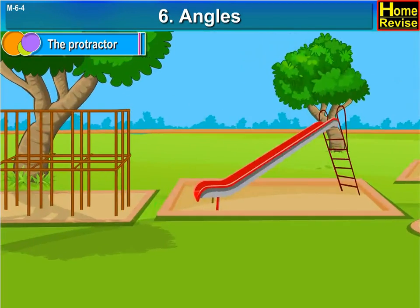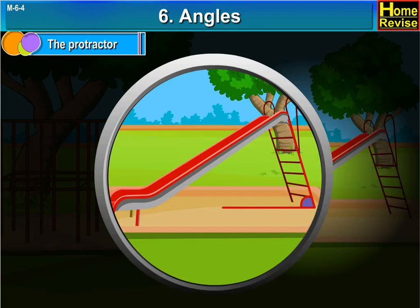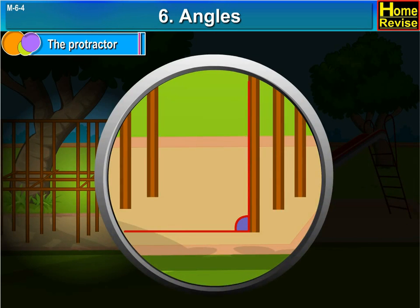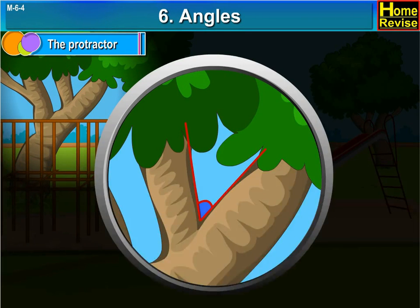See here, the slide is making an angle with the ground. There is an angle between this pole and ground. Even these branches of tree also have angle.